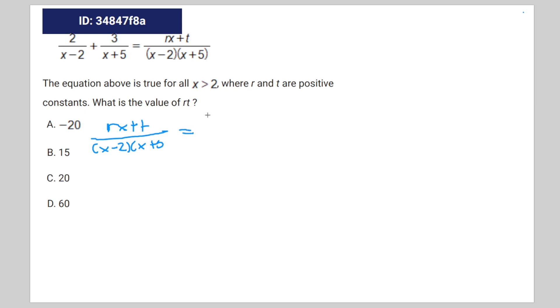This is equal to 3 times x minus 2 times that, plus 2 times x plus 5 times that. We're just going to pretend this is equal to this. Since they have a common denominator, you can cancel it out. You're going to be left with the equation rx plus t is equal to 3x minus 2.